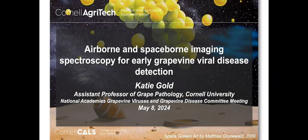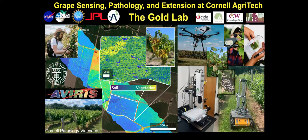Hello, my name is Katie Gold, and I'm an Assistant Professor of Grape Pathology at Cornell University. I run the Grape Sensing Pathology and Extension Lab at Cornell Agritech. We specialize in the use of a diverse range of sensing modalities across scales, from handheld to laboratory to proximal robotics as well as drones, and in particular, airborne and eventually spaceborne imaging spectroscopy for early grape disease detection.